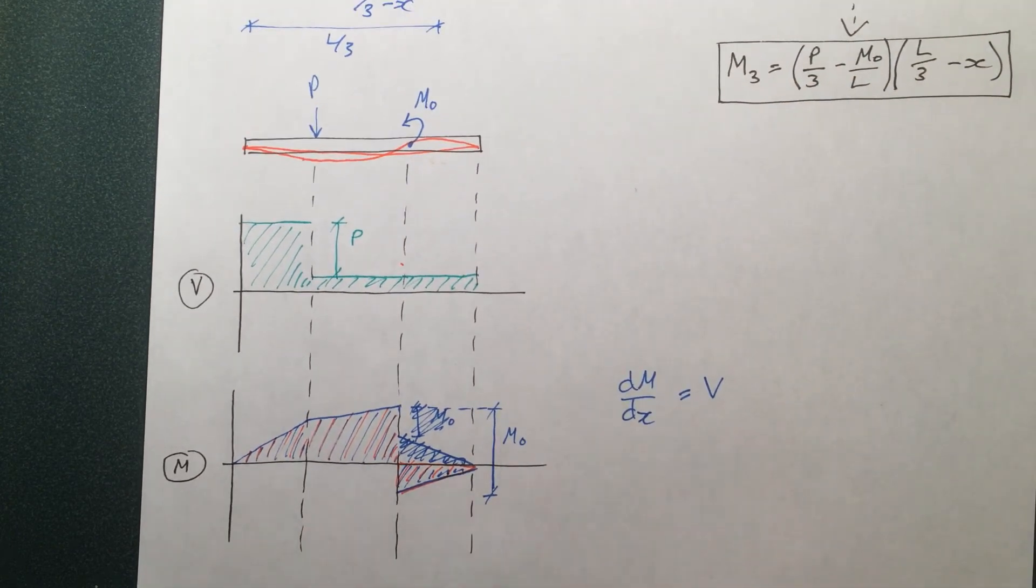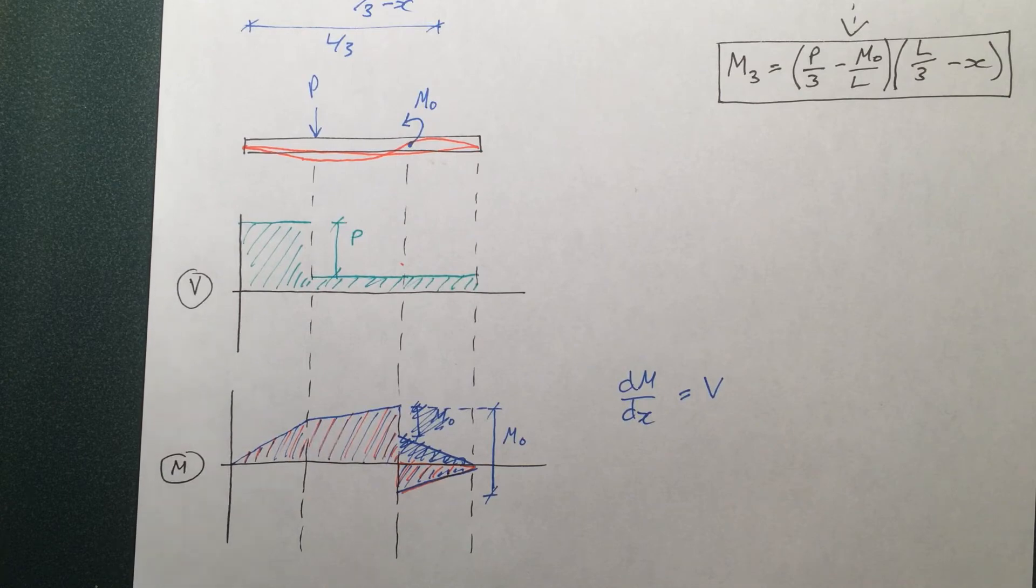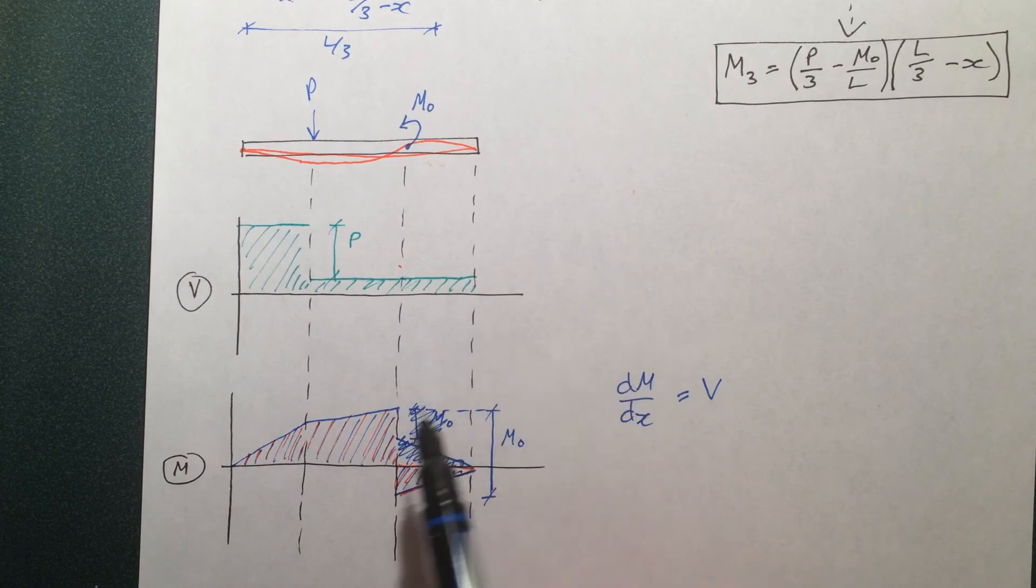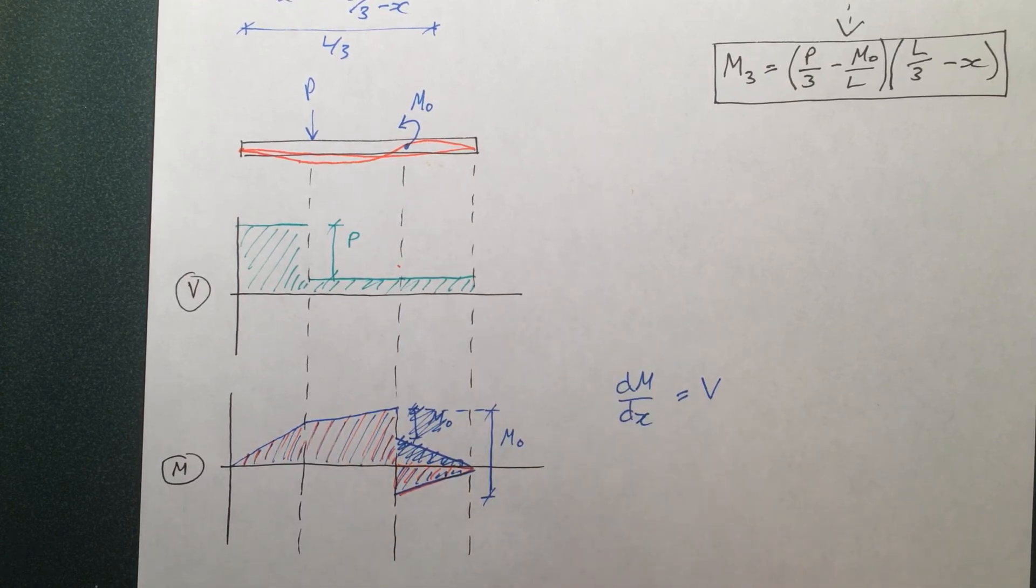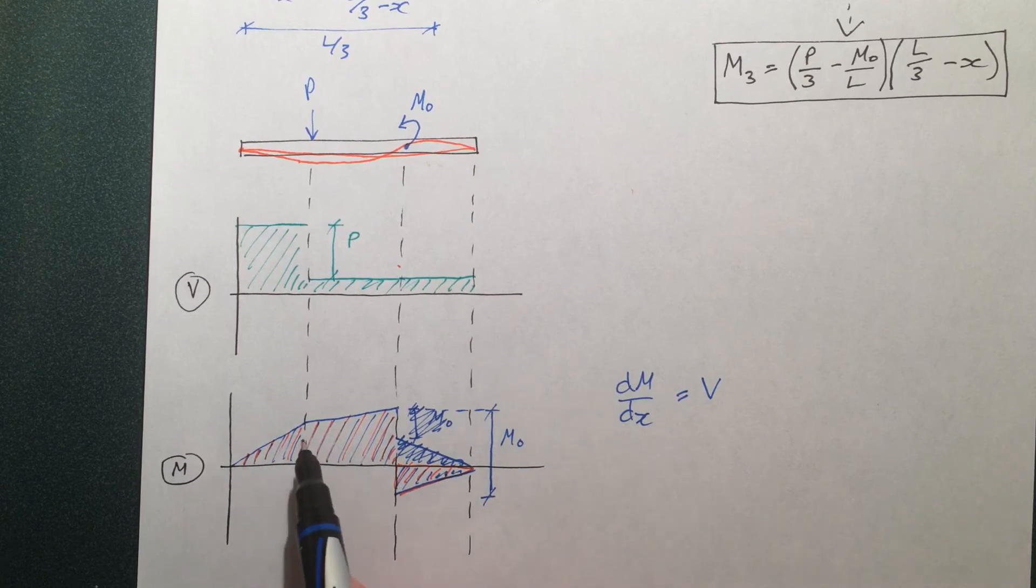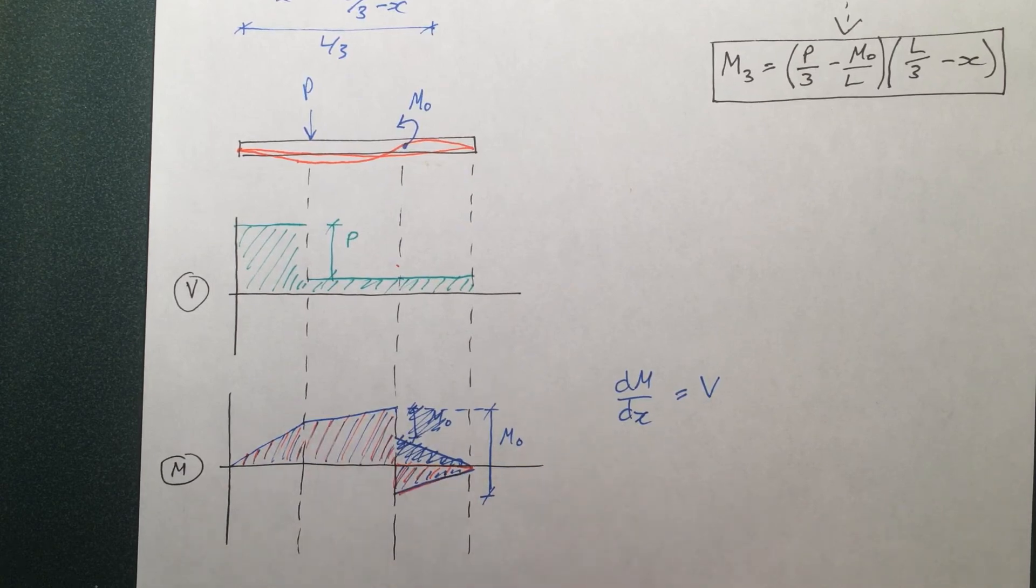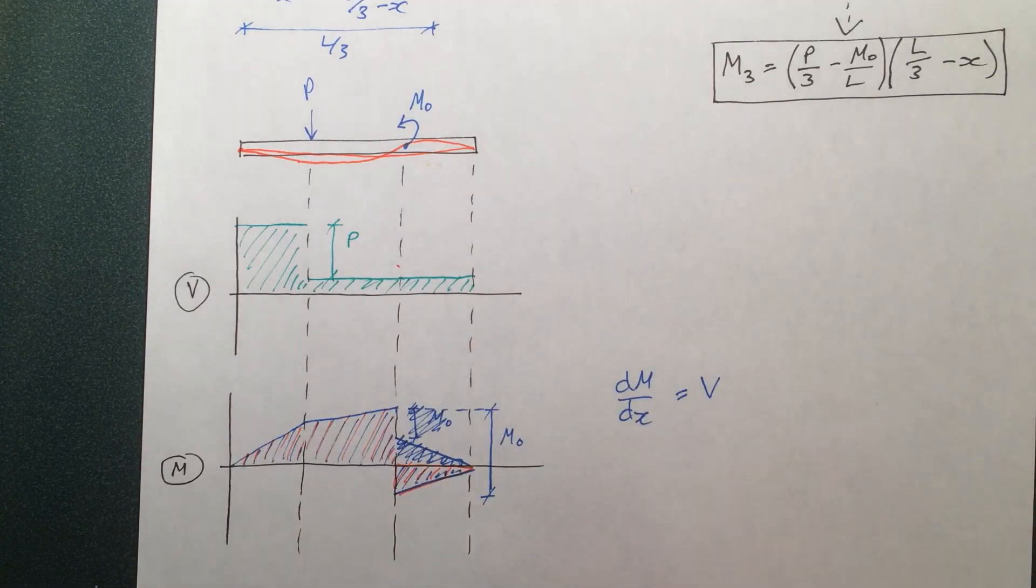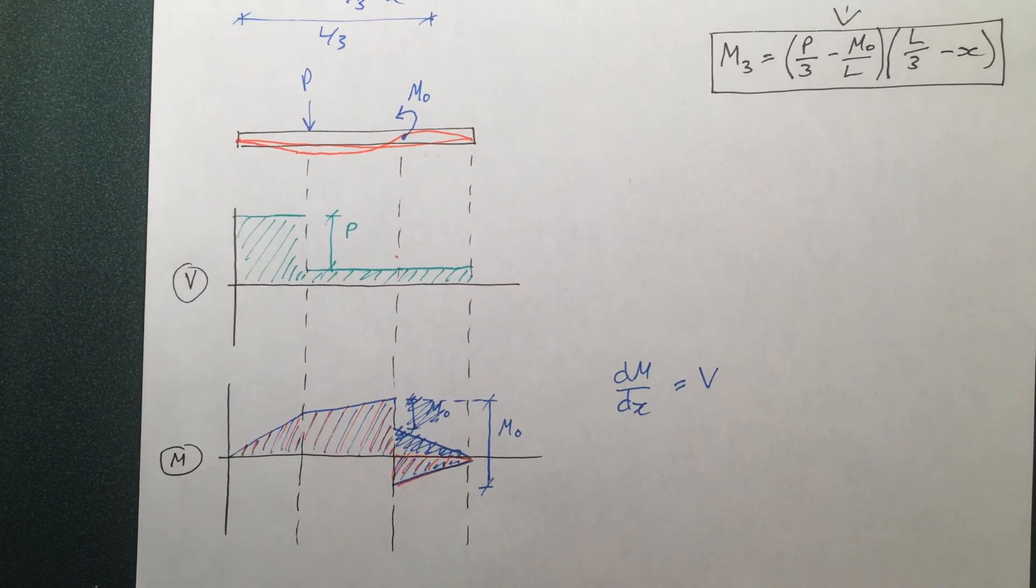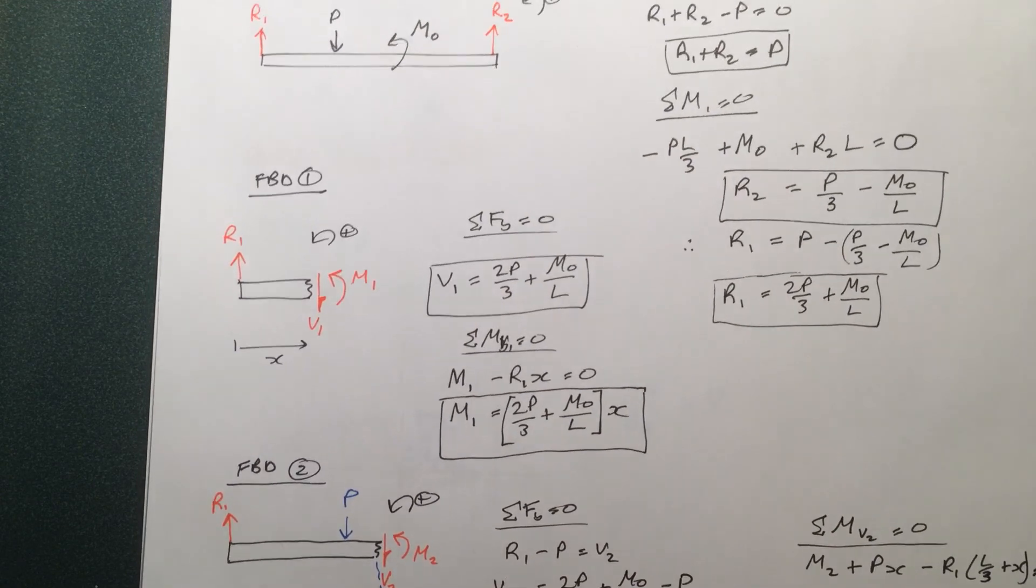I'll explain it one more time real quick. Since the shear force was constant, and the moment is the integration of the shear force, that means our slope here must be the same. And just because the slope is the same doesn't mean it has to be the same line. It could be a slightly displaced line with the same slope. Alright, there we go.